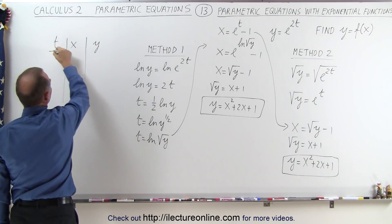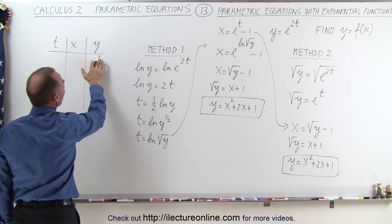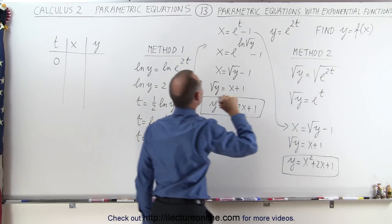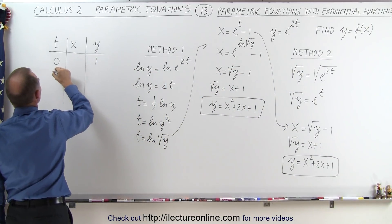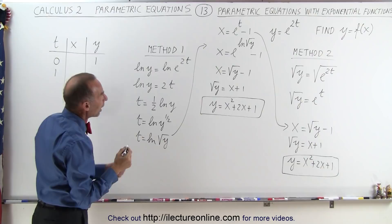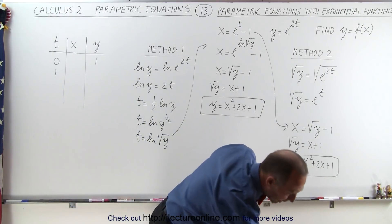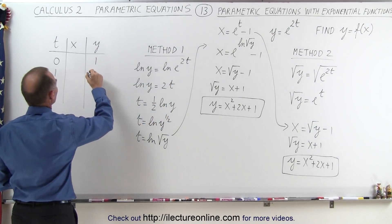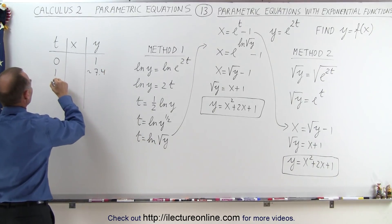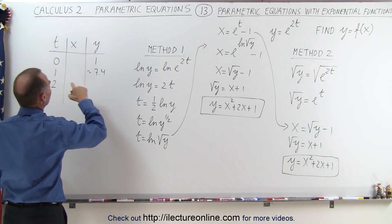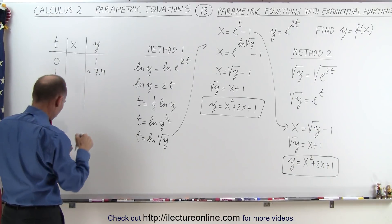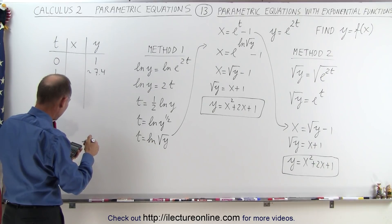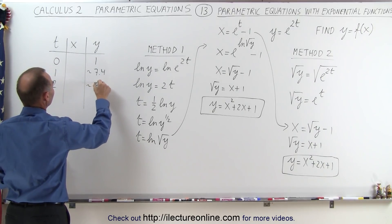Let's do t and y. If t equals 0, then e to the 0 is 1, so y equals 1. If t equals 1, then y equals e to the 2t, which is e squared, approximately 7.4. When t equals 2, y equals e to the fourth, which is approximately 54.6.